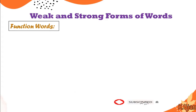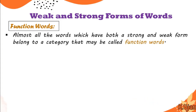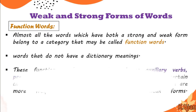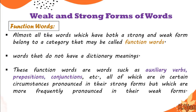Function words: mostly function words are used as weak forms in connected speech by native speakers. Almost all the words which have both a strong and weak form belong to a category called function words. What are function words? They are words that do not have dictionary meaning. These function words include auxiliary verbs, prepositions, and conjunctions — all of which are in certain circumstances pronounced in their strong forms, but which are more frequently pronounced in their weak forms.